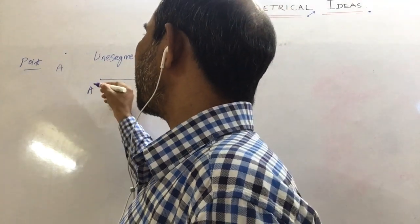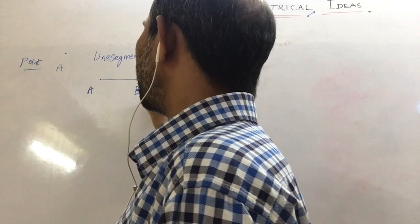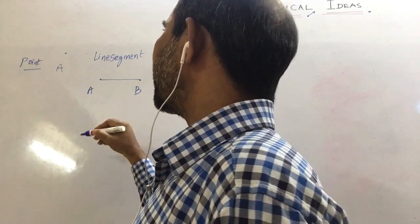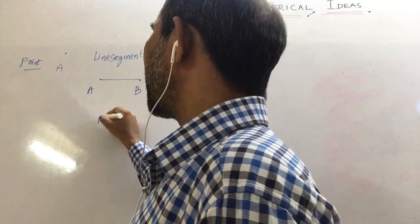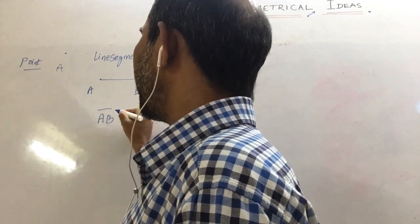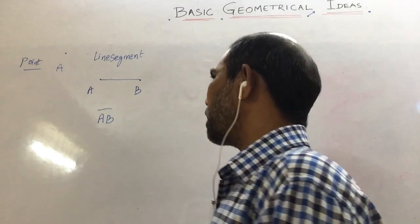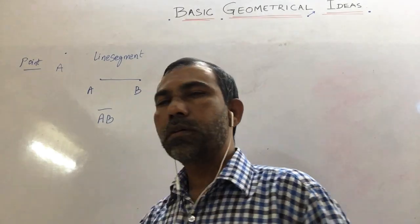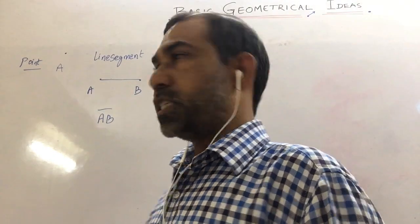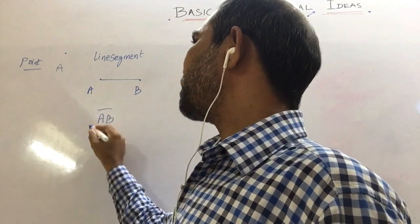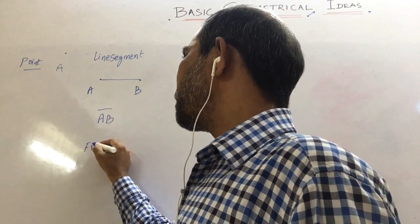The first end point here, this is second end point. Overall you can represent this line segment as AB and you need to write a line on the two points. This is the initial point and this is the end point. It has a fixed length, fixed measure.